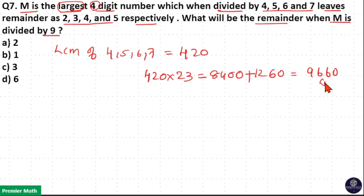If I add 420 again, you can see this will be greater than 10,000, so that is not possible. We need a 4-digit number.